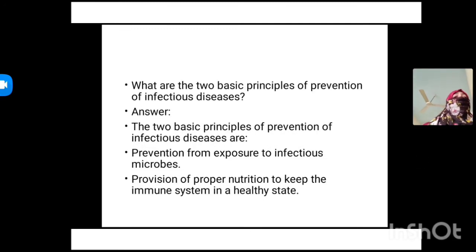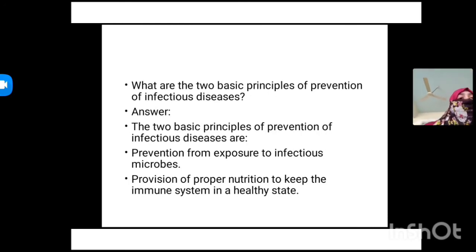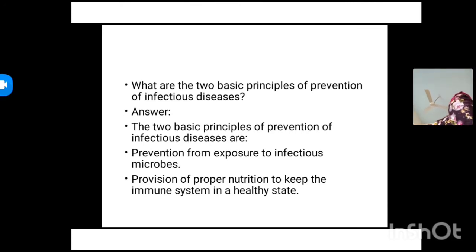The next question is: what are the two basic principles of prevention of infectious disease? The two basic principles are: first, prevention from exposure to infectious microbes; and second, provision of proper nutrition to keep the immune system in a healthy state. As your immune system is more powerful, it can fight with microbes and keep our body healthy.